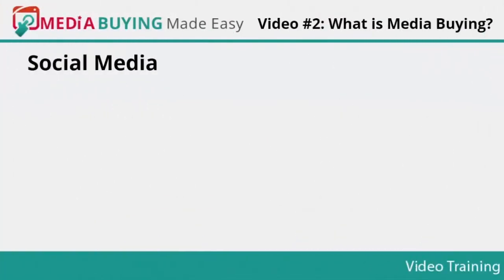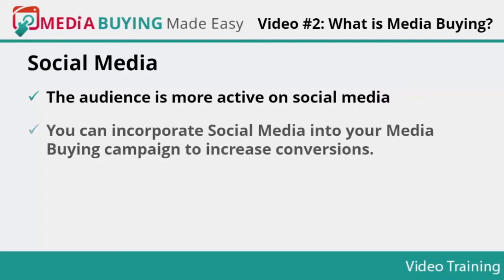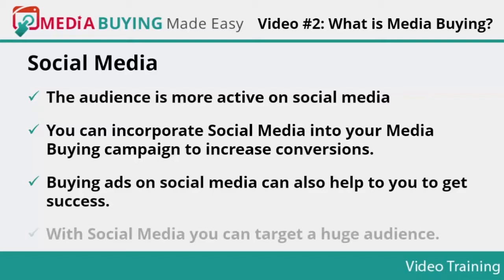Social media: the audience is more active on social media — Facebook, Twitter, Foursquare, and many more — so by not being active on it you are losing a lot of traffic. You can incorporate social media into your media buying campaign to increase conversions. Buying ads on social media can help you get success. You have to focus on objectives, ad placements, ad types, targeting options, data and insights, measurement, and budget. With social media you can target a huge audience according to their interest, demographics, and geographical location.